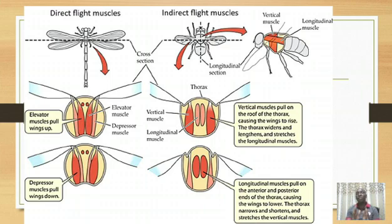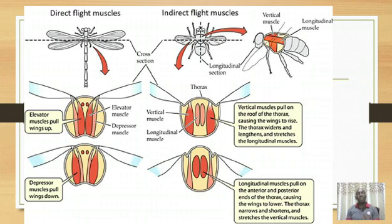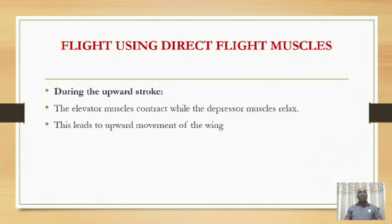From this we see that insects, in bringing about flight, have the elevator muscles — appearing in orange — which can also be referred to as the vertical muscles. Then the depressor muscles — appearing in pink — which can also be referred to as the longitudinal muscles. Those are the two sets of muscles: the elevator and depressor. They are also antagonistic, meaning when one contracts the other one relaxes.